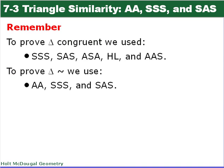Remember when we were proving triangles congruent, we used theorems and postulates: side-side-side, side-angle-side, angle-side-angle, hypotenuse-leg, and angle-angle-side. For similarity, we only have three to remember: angle-angle, side-side-side, and side-angle-side.